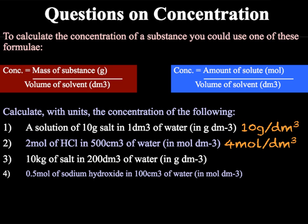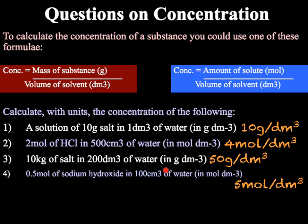Now pause the video to work out the final two questions, making sure you pay attention to the units given. The answers are: 50 grams per dm³, as we had 10,000 grams of salt in 200 dm³ of water; and finally, 0.5 moles of sodium hydroxide in 0.1 dm³ of water, giving a concentration of 5 moles per dm³.